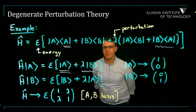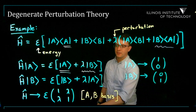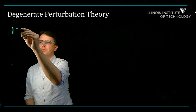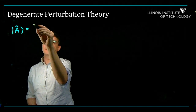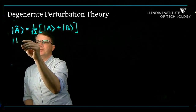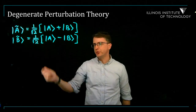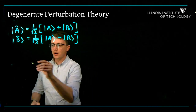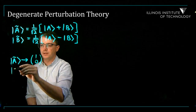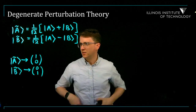Now let's define a different basis, which we could totally do, and see what this matrix looks like in that basis. We define A-tilde as (A + B)/√2 and B-tilde as (A − B)/√2, and use these two as our basis where A-tilde is (1,0) and B-tilde is (0,1). What does H look like in this basis?